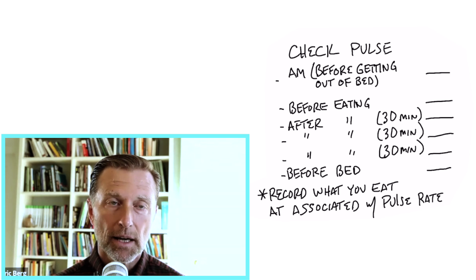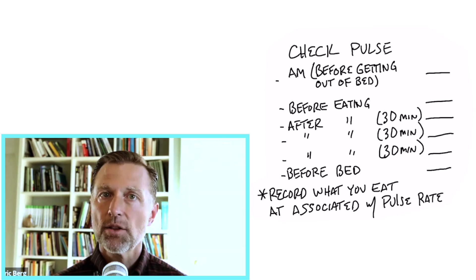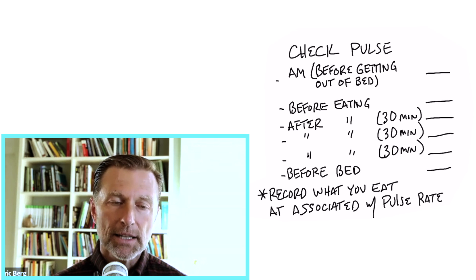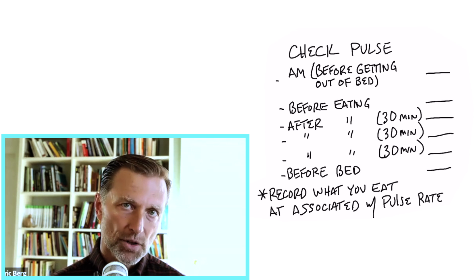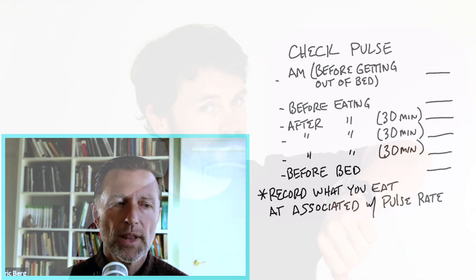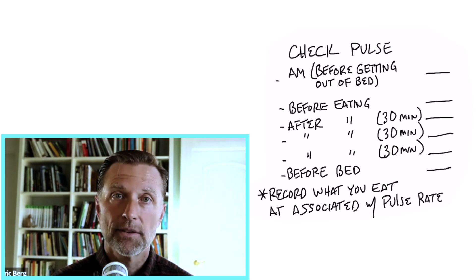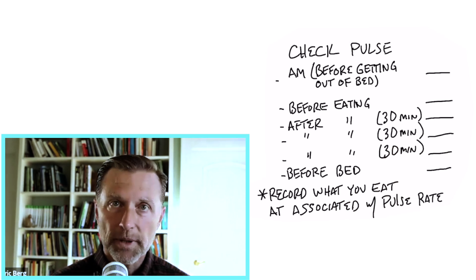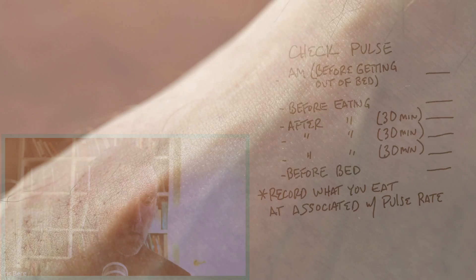Then what you simply do is check your pulse rate before you eat, and then you check it 30 minutes after you eat. And then check it another 30 minutes after, and then an additional 30 minutes after. So you actually checked your pulse rate before and then a total of an hour and a half later with intervals of 30 minutes. And of course you would do that with everything you ate. If you ate a snack or multiple meals, and then you just want to record what your pulse rate is right before you go to bed.